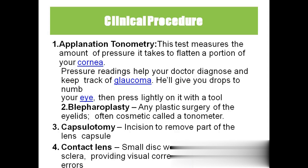Next is capsulotomy — removing a part of the lens capsule is called capsulotomy. Then contact lens. We all know that to correct hyperopia and myopia, which is farsightedness and nearsightedness, we usually go for glasses — putting on glasses is called cylindrical correction. The next option is contact lens.